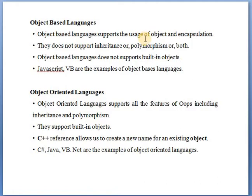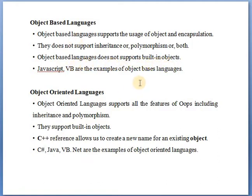Object based languages support the usage of objects and encapsulation. Encapsulation means wrapping up data and functions into a single entity called a class. They do not support inheritance or polymorphism or both. Inheritance means creating a new class from an existing one — deriving a new class from the base class. Polymorphism means same name but different function.